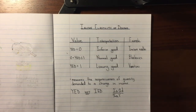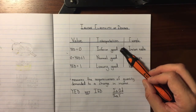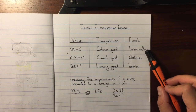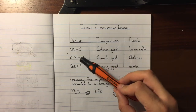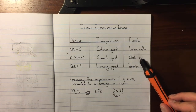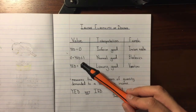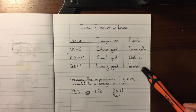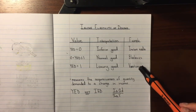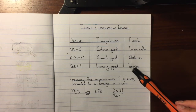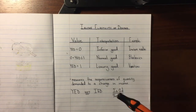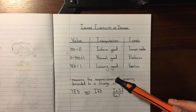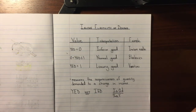We have three ranges of Income Elasticity. Less than 0 — any negative value indicates that it's an inferior good, an example of which would be instant noodles. If it's between 0 and 1, it's a normal good, such as blueberries. And if YED is greater than 1, then it's a luxury good — we can include vacations in that category. An inferior good is one that people consume less of as income rises, while normal and luxury goods are consumed more as income rises.